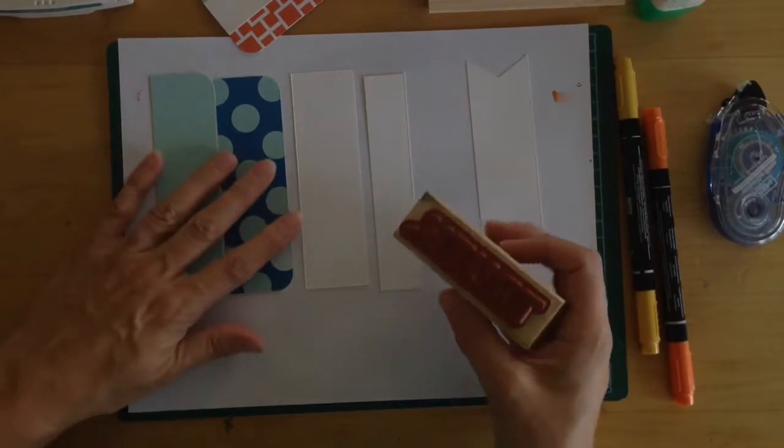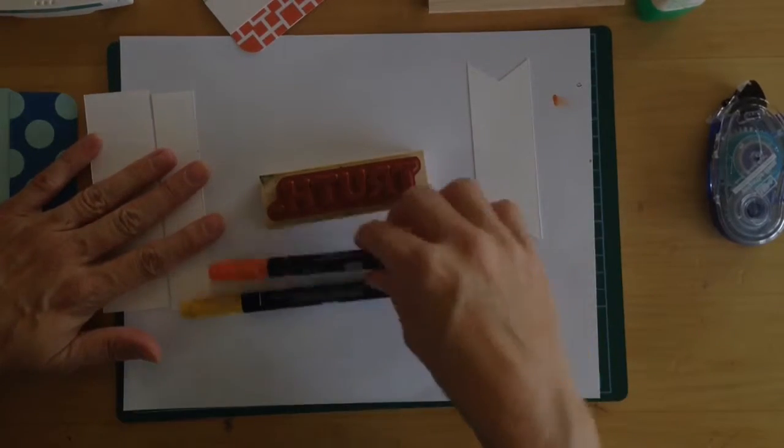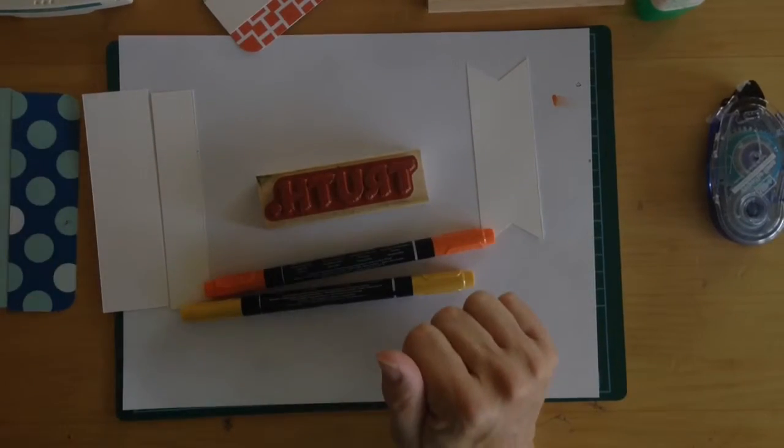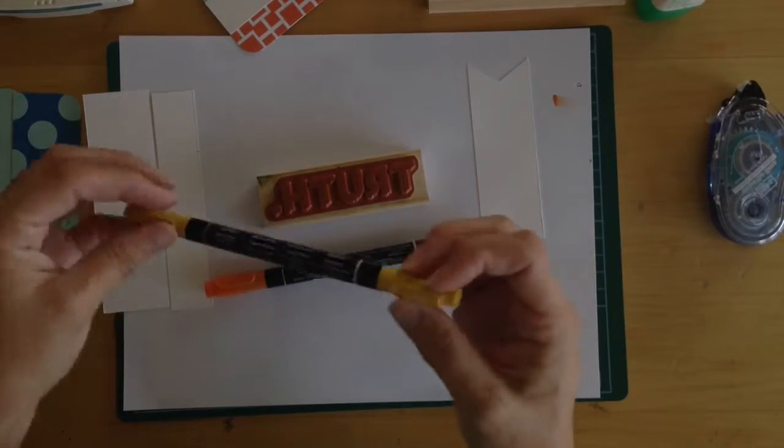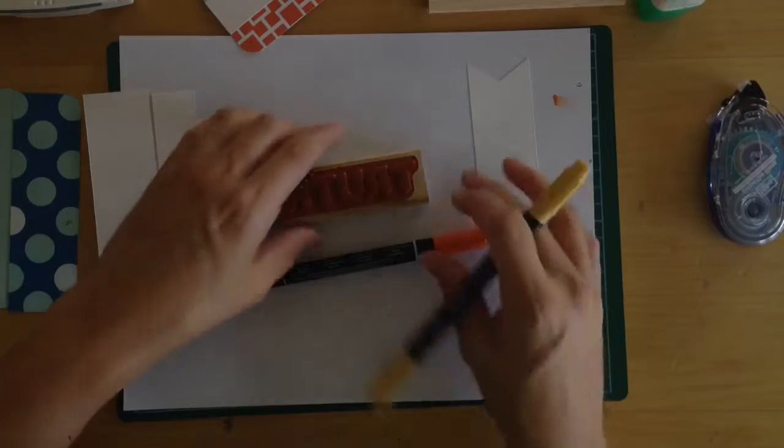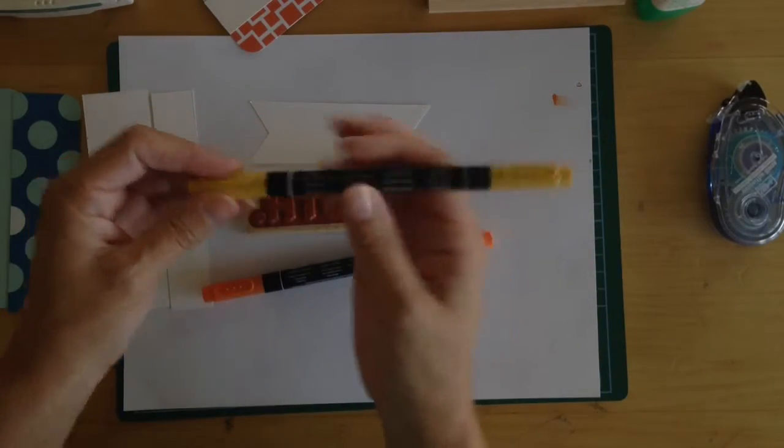What I did for some of them is I used my markers to kind of do an every other one. Play with the colors. You can do one in each color. So what you do to do that is I'm going to take my Whisper White here. I'm going to take my daffodil.